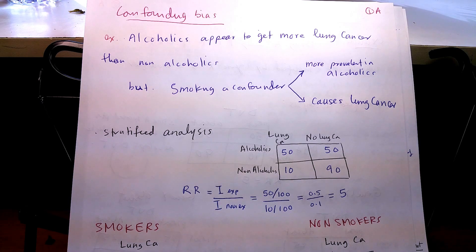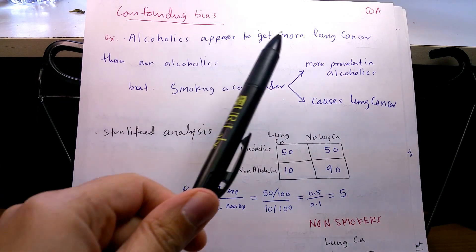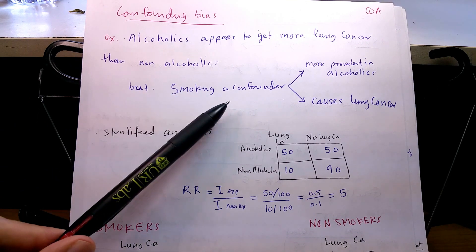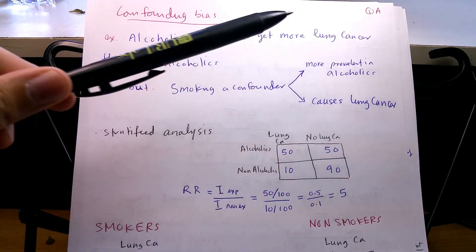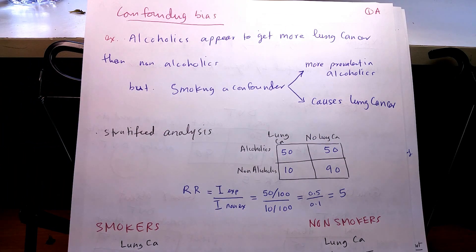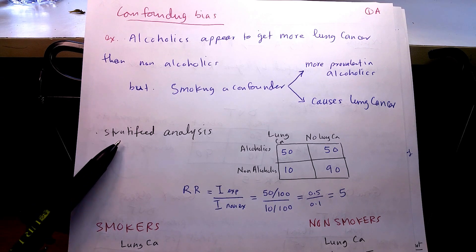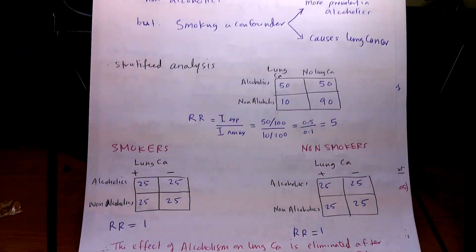Let's look at another example of how to use stratified analysis. In this case, they found in a study that alcoholics appear to get more lung cancer than non-alcoholics. But they found that smoking is a confounder — because smokers drink more alcohol, and smoking by itself is also a cause of lung cancer. They use stratified analysis, dividing the groups into smokers and non-smokers to examine the relative risk.